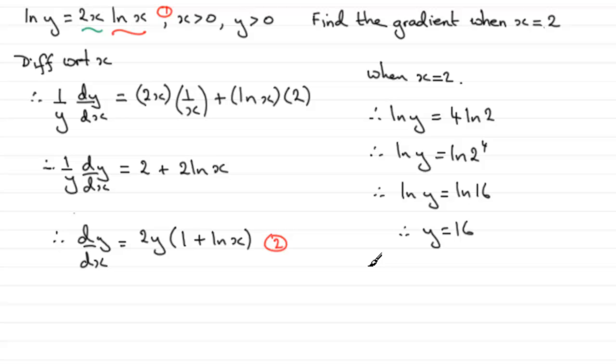So if we substitute these values now into this equation here, number two, we can say that, let's just say sub x equals 2, y equals 16 into equation two, and what we have is that therefore dy by dx equals 2 times y, 2 times 16 is 32, multiplied by 1 plus